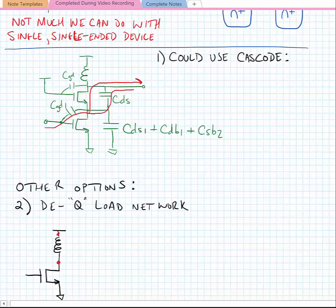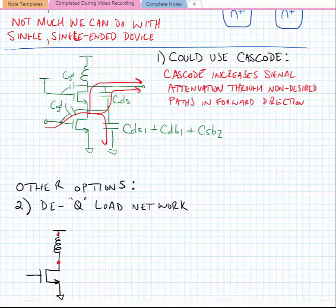Some of it can go through the CDS capacitance if there's any drain-to-source overlap capacitance. And some of it is even going to be attenuated by going through the drain capacitance of the first device. So what we're really showing here is that the cascode device increases the signal attenuation through the non-desired paths in the forward direction from input to output.